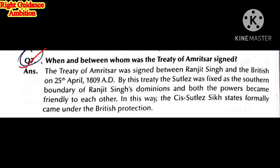When and between whom was the Treaty of Amritsar signed? The Treaty of Amritsar was signed between Maharaj Ranjit Singh and the British on 25th April 1809. By this treaty, the Sutlej was fixed as the southern boundary of Maharaj Ranjit Singh's dominance, and both powers agreed to maintain a friendly relationship.